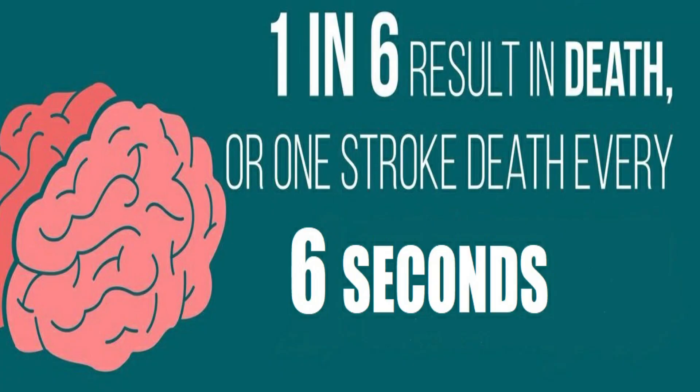The disease claims a life every six seconds. In this video we will cover: what is a brain stroke or cerebrovascular accident (CVA), causes and types of brain stroke, acute and sudden symptoms especially when the patient is at home, what is transient ischemic attack or TIA, and finally acute stroke management at home and treatment or recovery options.